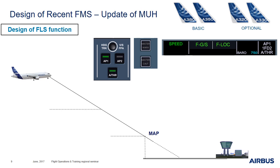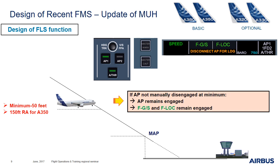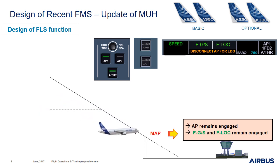The associated guidance modes are F-LOC and F-GS. When flying a non-precision approach using the FLS function with F-LOC and F-GS modes engaged, once the aircraft reaches minimum minus 50 feet — or 100 feet radio altimeter for the A350 — the memo 'DISCONNECT AP FOR LANDING' is displayed on the FMA. If the AP was not manually disengaged at minimum, the AP will remain engaged and F-LOC/F-GS mode will remain engaged down to the ground. At the missed approach point, there is no automatic AP disconnection — the AP and F-LOC/F-GS modes remain engaged.